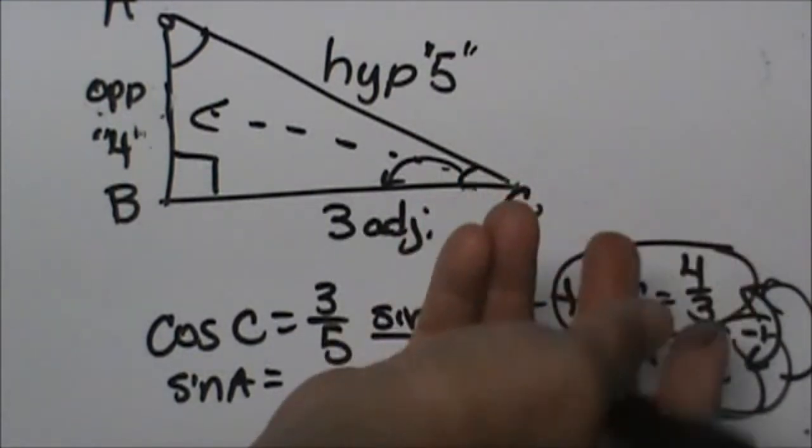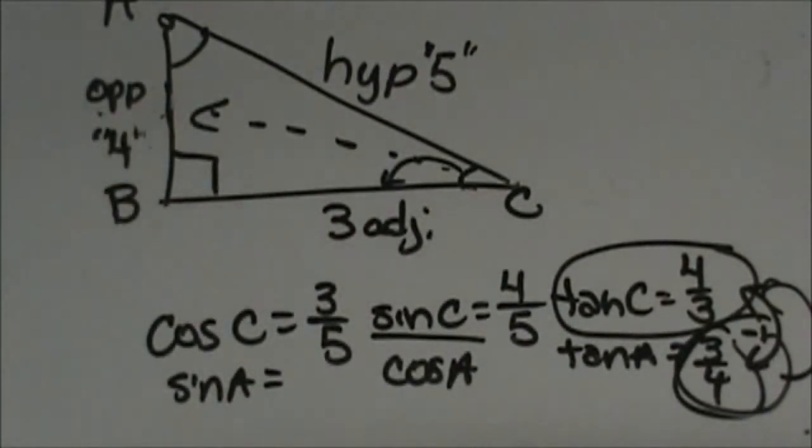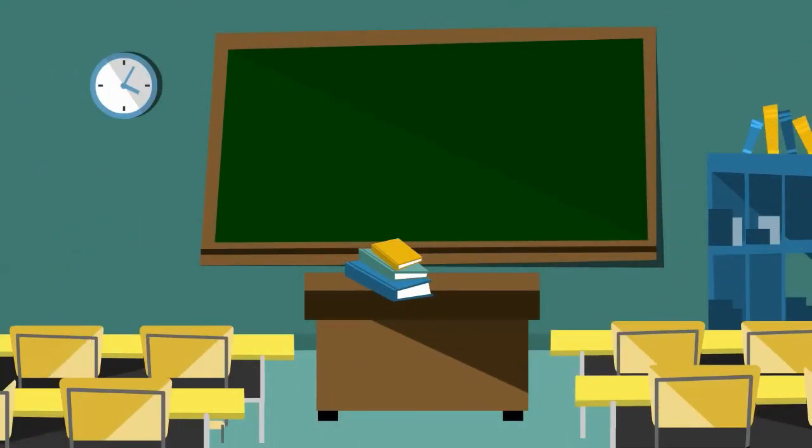So the tangents are just reciprocals of one another. So that's those relationships. Now let's look at a couple little practice problems on that.